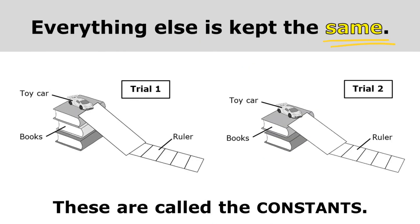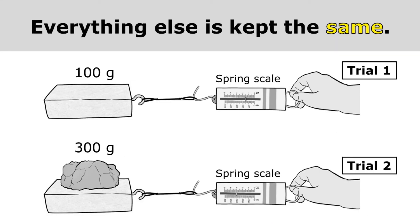Everything else is kept the same, and these are called the constants — the things that are the same between trials. So I'm using the same car, the same ramps, the same rulers each time. Those are the constants. And in this investigation, I'm attached to the same sled to make sure I'm dragging that across the table. I'm using the same spring scale, and it's important that the scientist would pull on this the same way each time. We change one thing, we measure one thing, but everything else is kept the same.